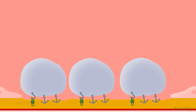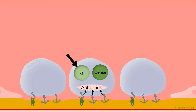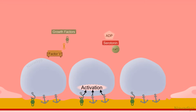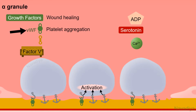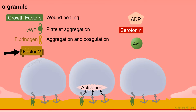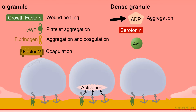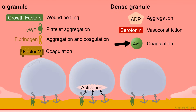Binding of these receptors activates the platelet. Platelets have storage vesicles like alpha and dense granules. Upon activation, contents of these granules are released into the surroundings. Contents of alpha granules include various growth factors which carry out wound healing, von Willebrand factor which contributes to platelet aggregation, fibrinogen which contributes to aggregation as well as coagulation, and factor V which contributes to coagulation. Contents of dense granules are ADP, which helps in platelet aggregation, serotonin which causes vasoconstriction, and calcium which contributes to coagulation. Among these, fibrinogen and ADP play an important role in platelet aggregation.